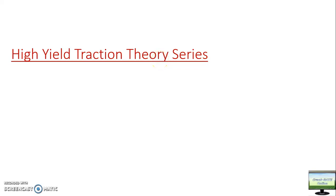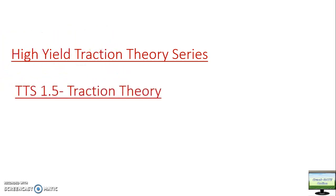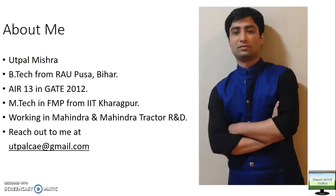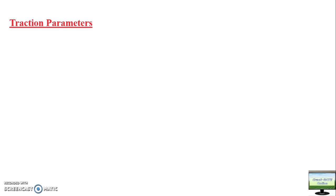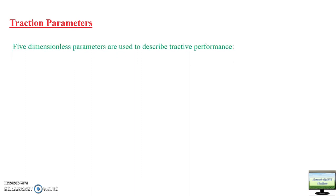Hello friends, hope you are doing well. This is the next video in this traction theory series. In this video I will explain some advanced concepts of traction theory — this is BTS 1.5. I was explaining in my previous video the parameters which are used to describe the tractive performance of two tractors and compare which tractor is better. These are of prime importance, and there are five dimensionless parameters used to describe tractive performance.